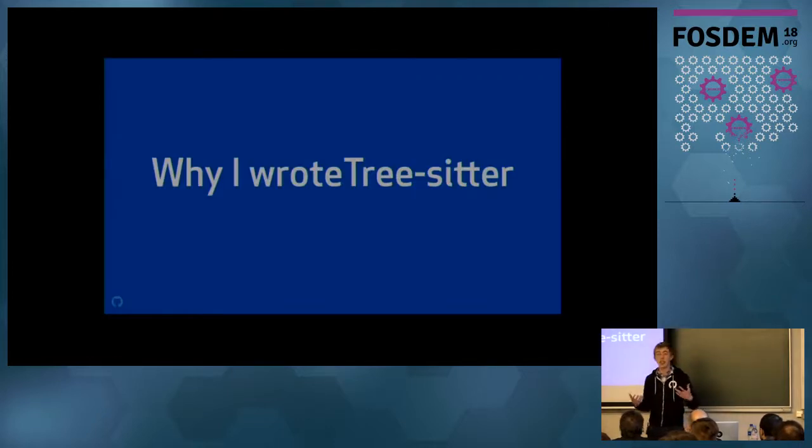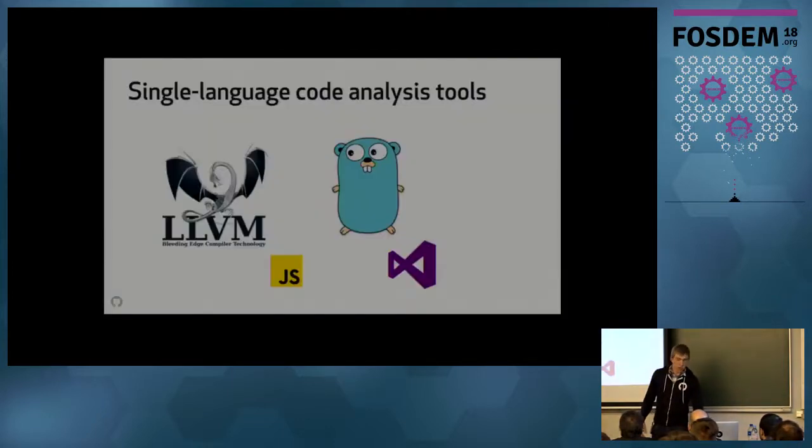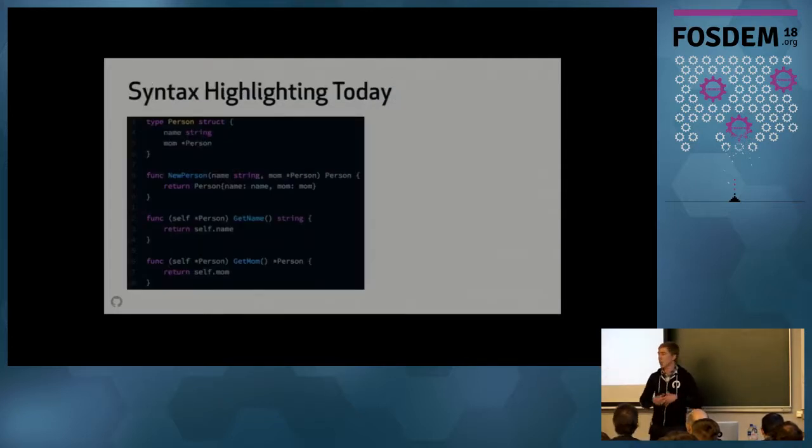So now I'll explain why I chose to write this. So there already exist good parsing tools today that are specific to any given language. If you just want to parse C, you can use libclang. If you want to parse Go, you can use the Go AST package and so on. And yet, I would argue that most of the tools that we rely on the most as software developers still don't have good source code parsing capabilities. So for example, let's take a look at some syntax highlighting that you might see in your text editor today.